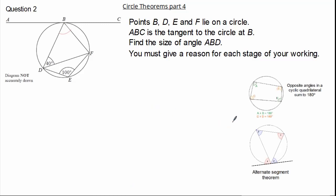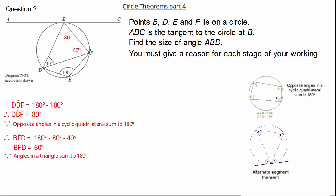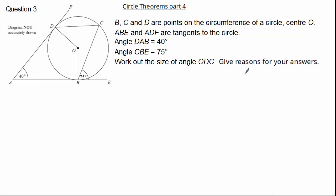This leaves us with the possibility of using the alternate segment theorem and angles in a cyclic quadrilateral summing to 180 degrees. Looking at the question you might be able to spot that we have a cyclic quadrilateral. So we can work out angle DBF to be 180 subtract 100, which gives us an angle of 80 degrees. This is because opposite angles in a cyclic quadrilateral sum to 180 degrees. From here we can calculate angle BFD: 180 subtract our 80 subtract our 40 gives us an angle of 60 degrees, because angles in a triangle sum to 180 degrees. Now looking at the alternate segment theorem, angle ABD must be 60 degrees, because using the alternate segment theorem it equals angle BFD.